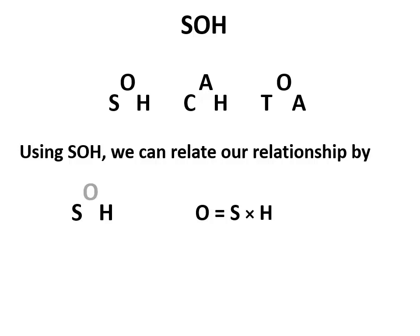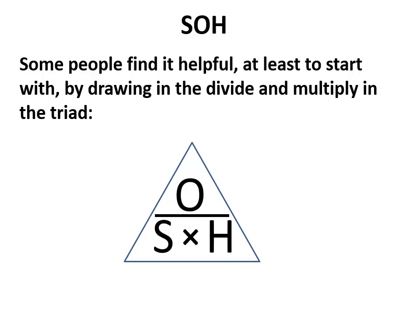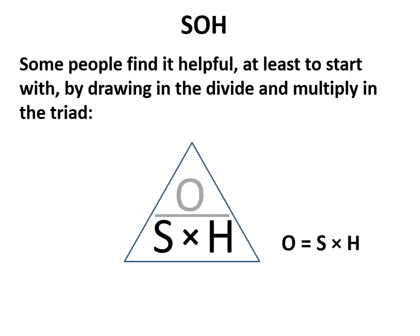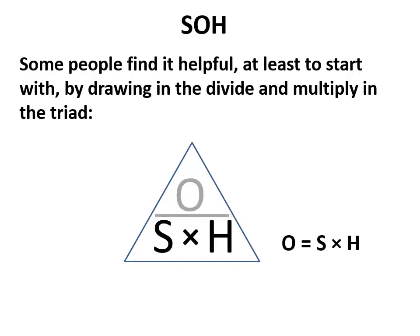Initially, people often prefer to write it out in the triad form — a triangle with a line indicating division, the two values below, and a multiplication sign between the two at the bottom. The procedure is exactly the same: to find sine, it's opposite divided by hypotenuse; to find opposite, it's sine times hypotenuse; to find hypotenuse, it's opposite divided by sine. Each time, we gray out or cover up the one we want, and the remaining relationship is what we use. We grayed out the sine, so it's the remaining two: O divided by H.